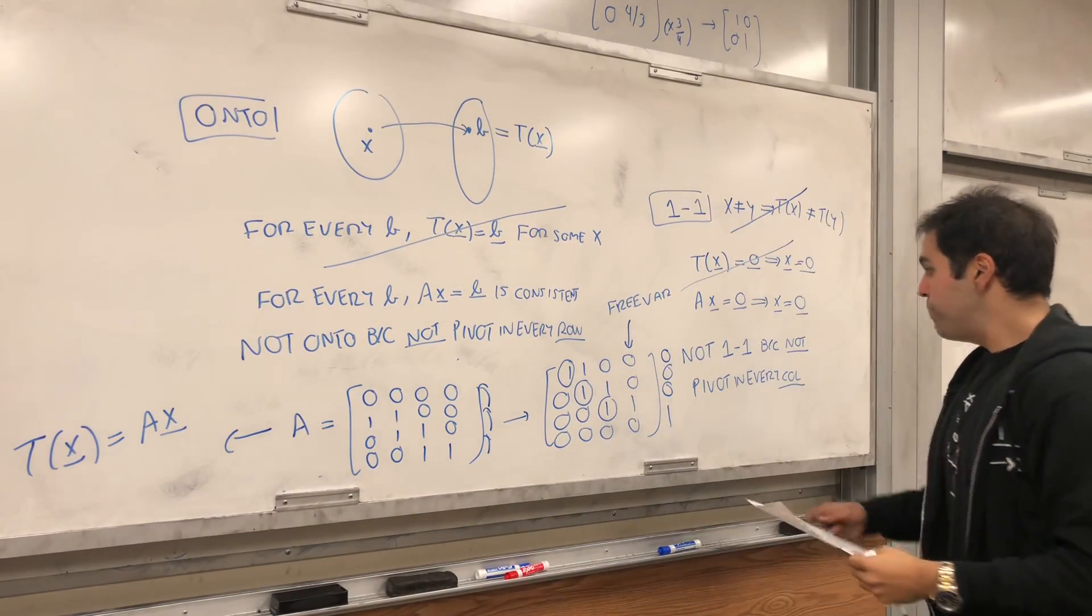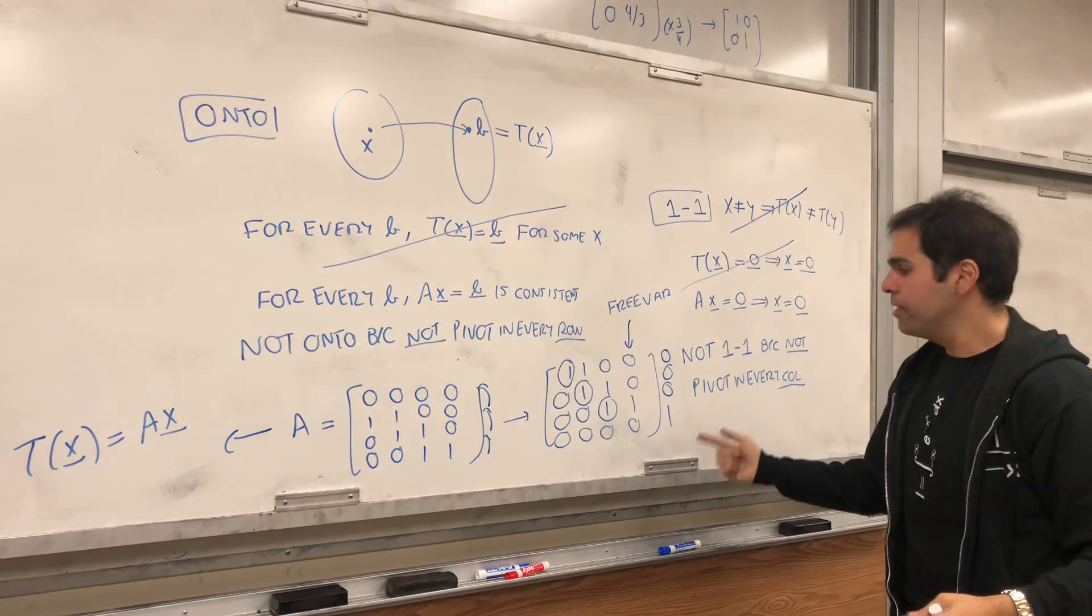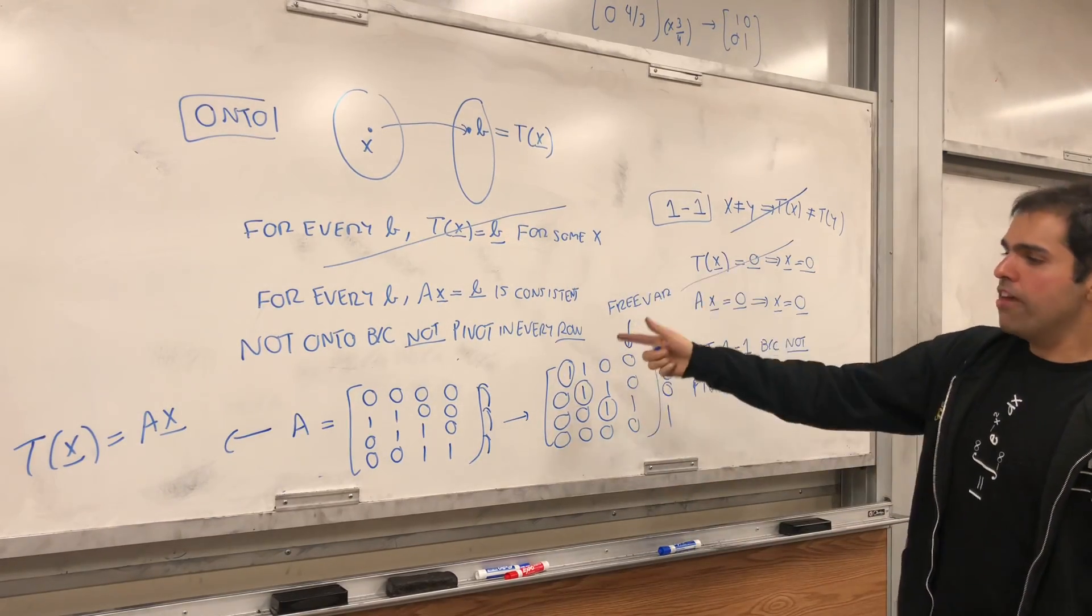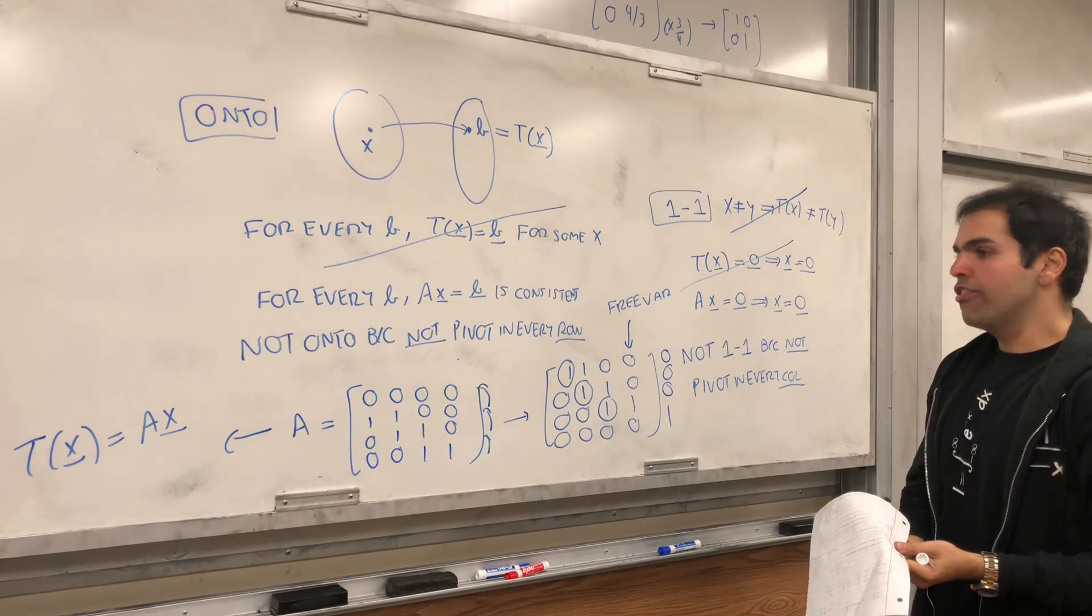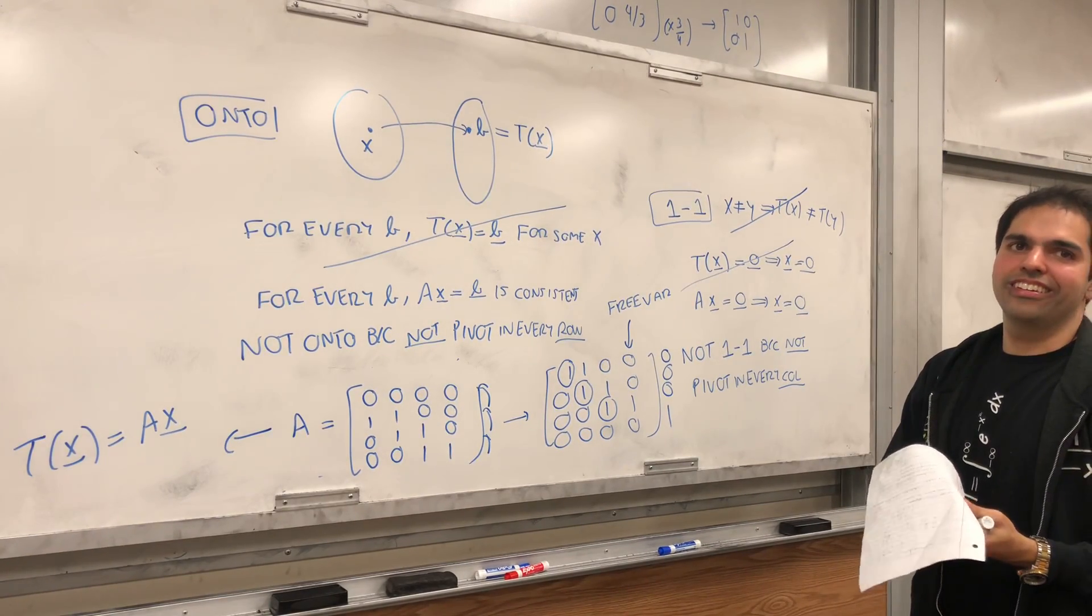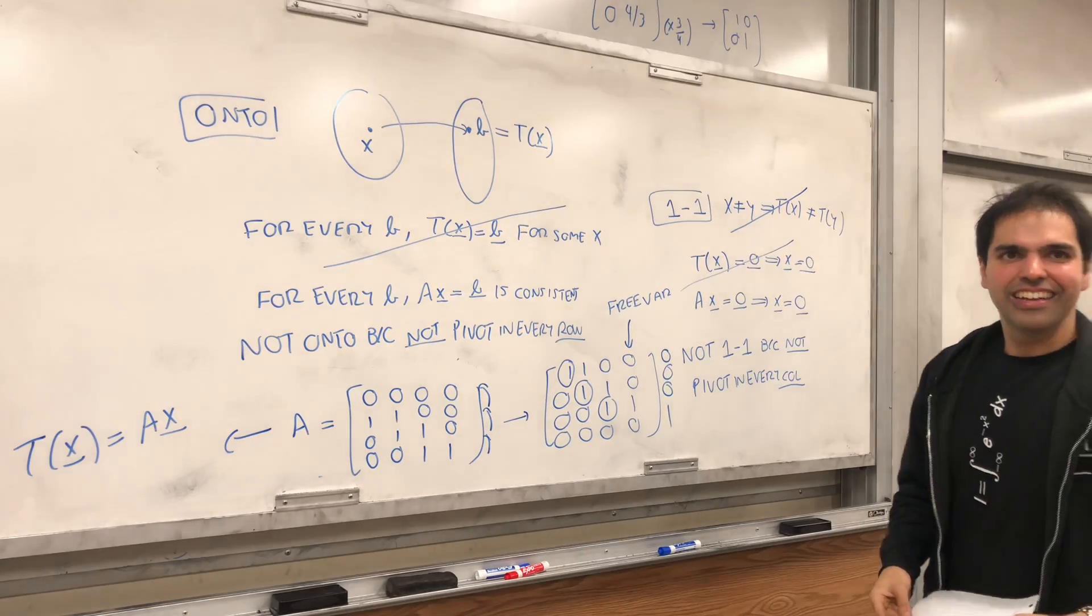So, I think it's very interesting. Pivots in every column means one-to-one. Pivot in every row means onto. So, if you have both of them, it's pretty fantastic. Nice. Yeah. Woo!